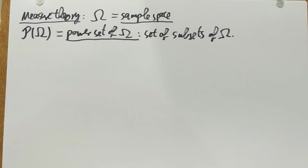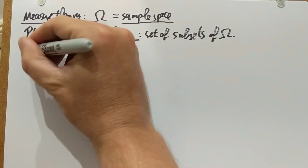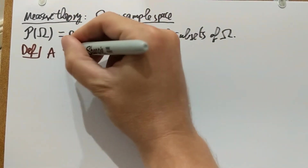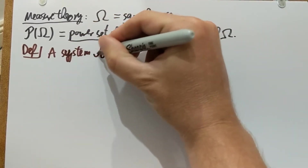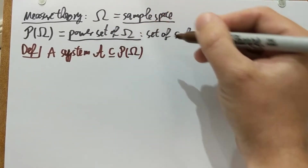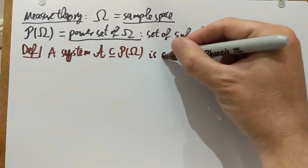So all possible parts of omega. Now this is too large and too general in this form to deal with, and therefore we're going to restrict this power set to various constructions which we can work with later on. So here's our first attempt at doing that definition: a system A, which is a subset of the power set — so some collection of subsets of omega — this system is called an algebra.